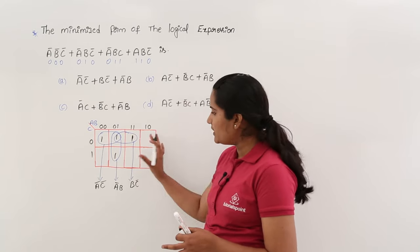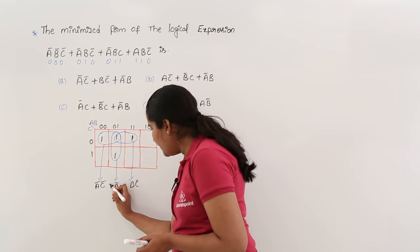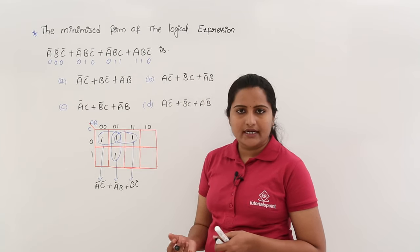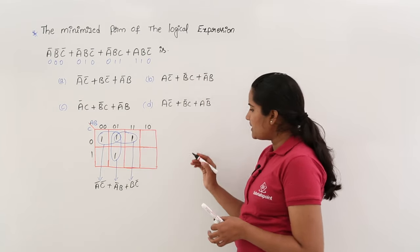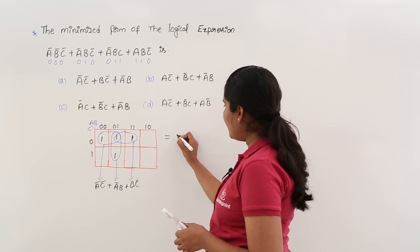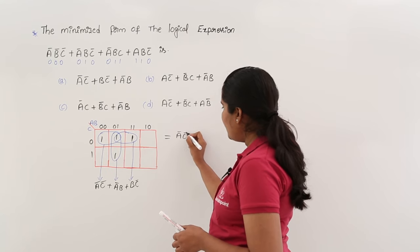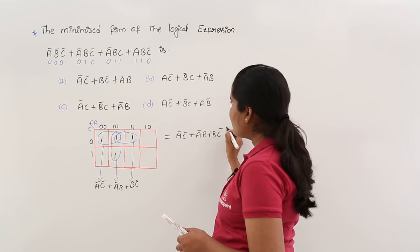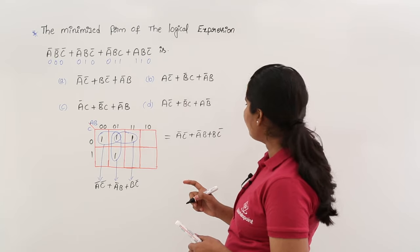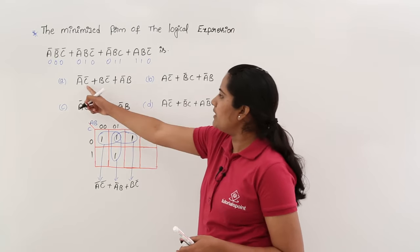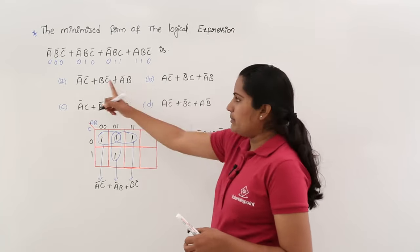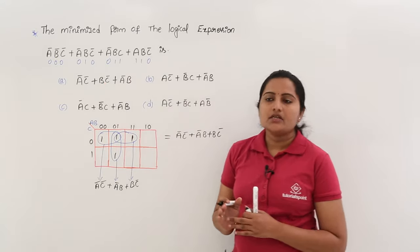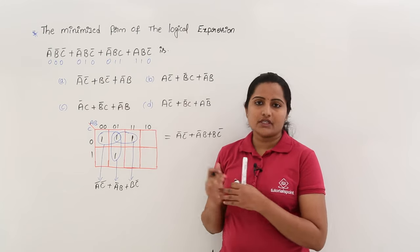These are the prime implicants of this given K-map. By adding all these prime implicants, the final simplified expression from this K-map is ā·c̄ + ā·b + b·c̄. Comparing with the options — ā·c̄, ā·b, and b·c̄ — option A is the right answer for this problem.